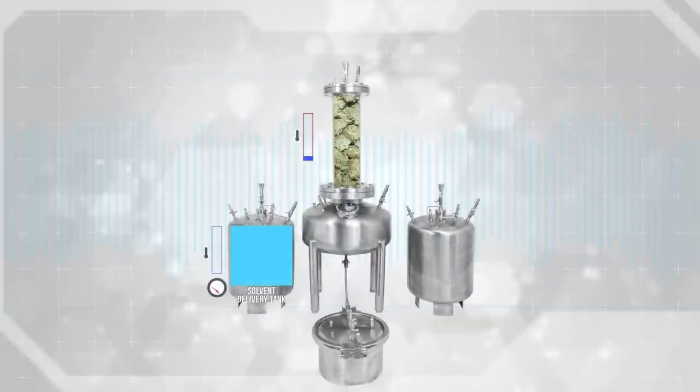Step 1: Attach your solvent delivery lines. Connect one end of the solvent delivery line to the top of the solvent delivery tank's liquid siphon center exit valve. Connect the other end of the solvent delivery line to the top of the column liquid center inlet valve.